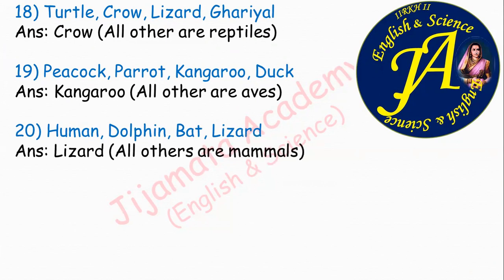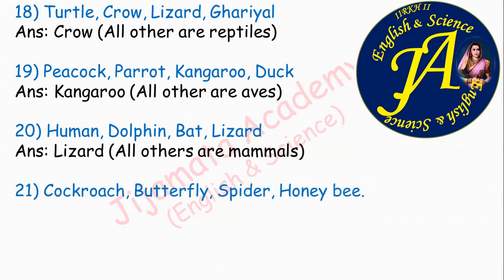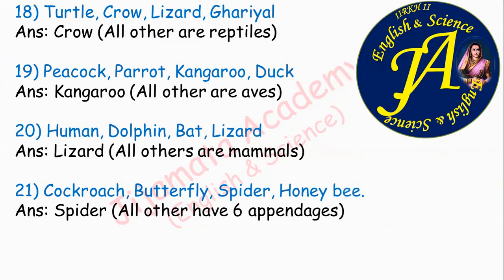Cockroach, butterfly, spider, honeybee. All belong to phylum Arthropoda. But the correct answer is spider, because spider has 8 appendages while cockroach, butterfly, and honeybee have 6 appendages.